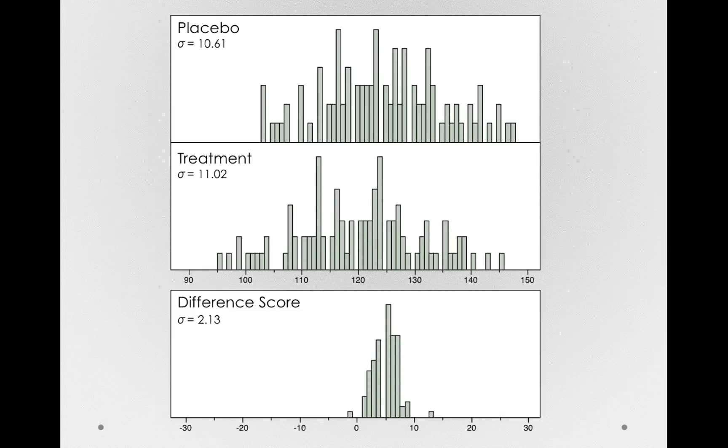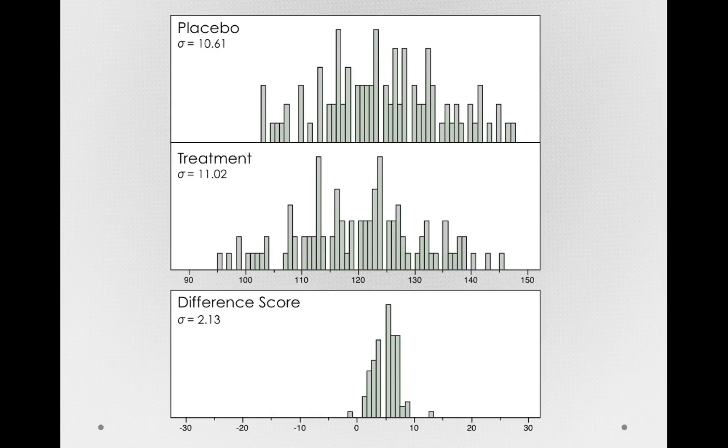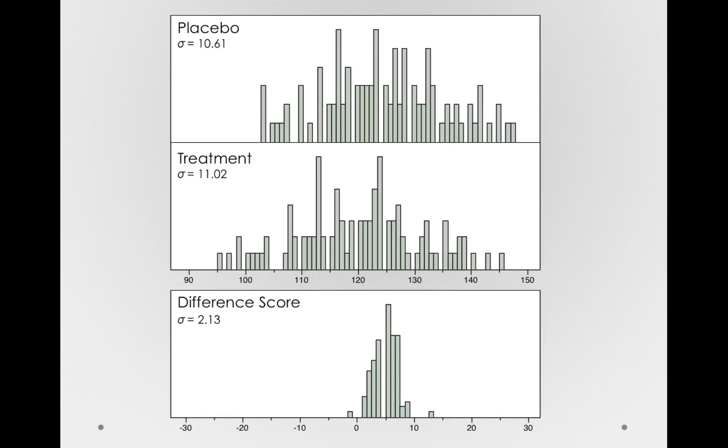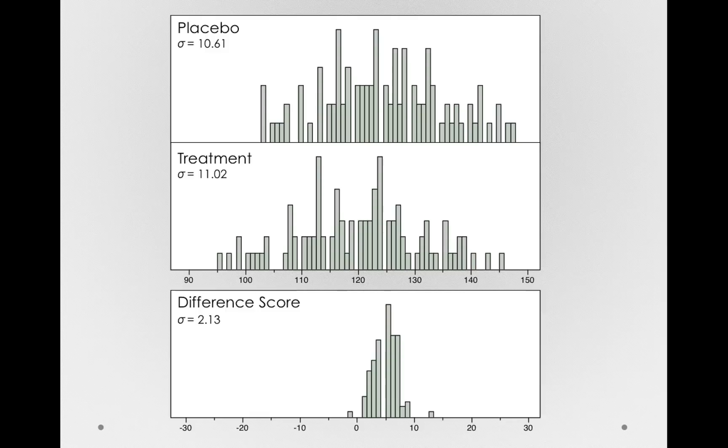The reason why is that we're ignoring all that inner person difference. That is, all the individual differences, where somebody started, are being subtracted out. And so we're getting a much more pure measure of the effect of treatment. Said differently, the same person measured twice is more likely to be close to themselves than one person versus another person. So by forming a difference score, we actually don't care where they started. We just care how much change happened.